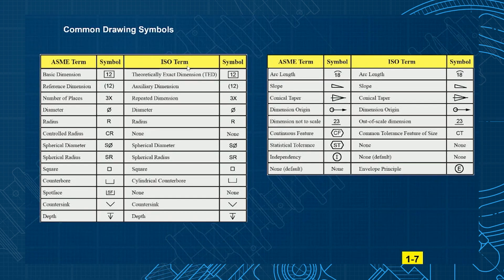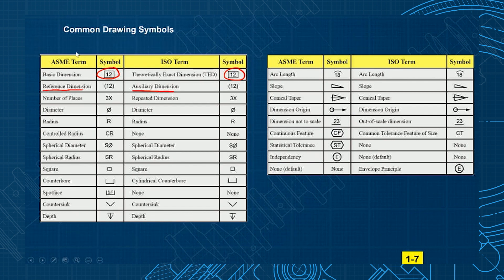Here are the common drawing symbols I showed in the beginning of Unit 1 — I have the ASME term and symbol, and right next to it the ISO term and symbol, and you can see how similar they are. Basic Dimension versus Theoretically Exact Dimension (TED). A reference dimension in ASME, they call an auxiliary dimension. Number of places, they call a repeated dimension. Diameter and radius — most of these are the same.